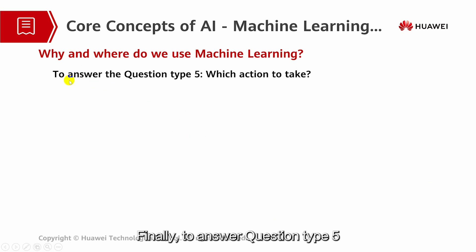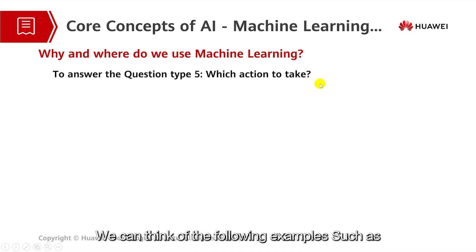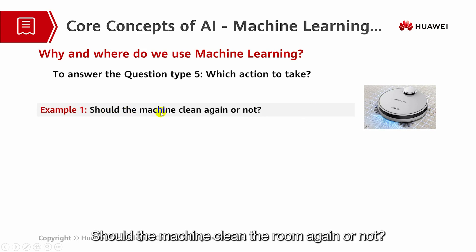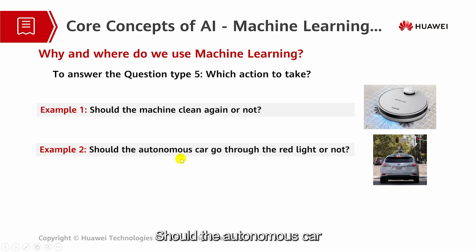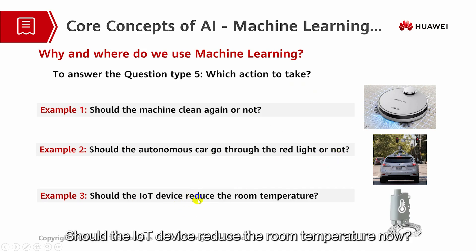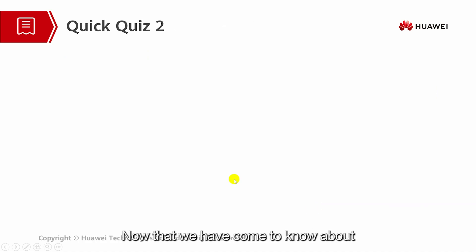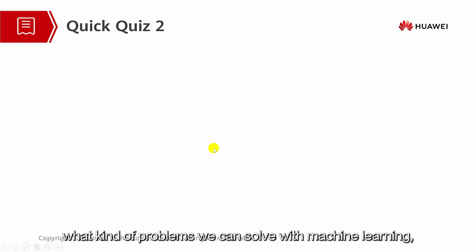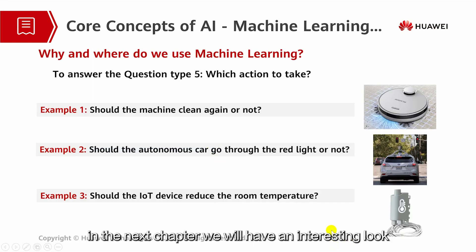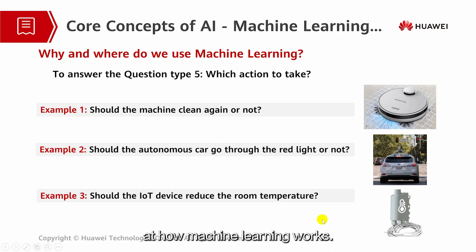Finally, to answer question type 5 — which action to take — we can think of examples such as: should the machine clean the room again or not? Should the autonomous car go through the red light or not? Should the IoT device reduce the room temperature now? Now that we have come to know what kind of problems we can solve with machine learning, in the next chapter we'll have an interesting look at how machine learning works.